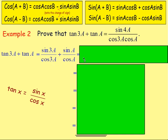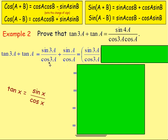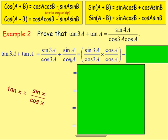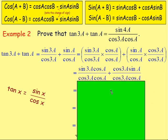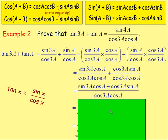From there we end up with these two fractions. If you look at our answer, we just have one fraction, so let's add these fractions together. To add fractions you need the same denominator. Taking sin(3a) / cos(3a), we need the denominator to be cos(3a)·cos(a), so we multiply numerator and denominator by cos(a). With sin(a) / cos(a), we multiply numerator and denominator by cos(3a). Doing that, you end up with sin(3a)·cos(a) over cos(3a)·cos(a), plus sin(a)·cos(3a) over cos(3a)·cos(a).